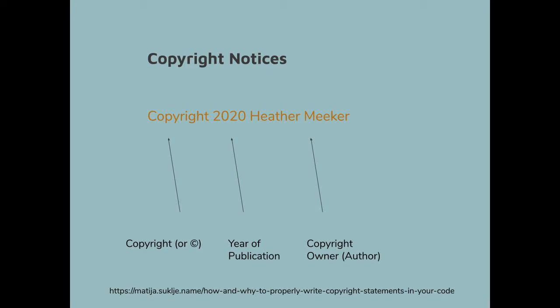Copyright notices are a little bit different from license notices. A copyright notice literally is a notice of who claims copyright ownership in the code. In the U.S. it has three parts: the word 'copyright' or a circle C, the year of publication — which for software usually means the year of release — and the name of the copyright owner, who will be the author of the work unless those rights have been sold or assigned to another owner. If you want some detailed guidance on copyright notices, take a look at the link on this slide, which explains in practical detail how to do license notices for packages containing open-source software.